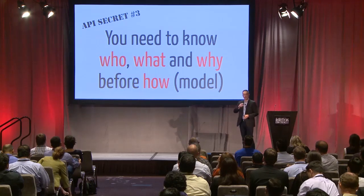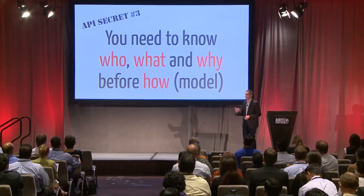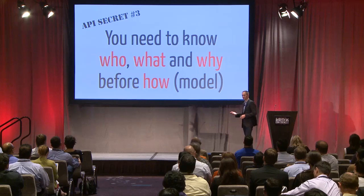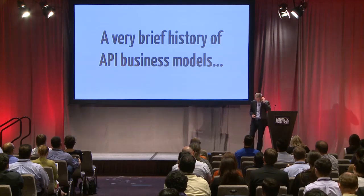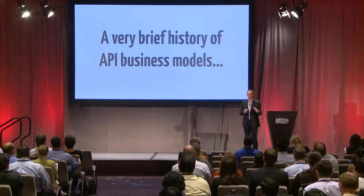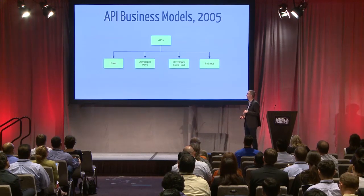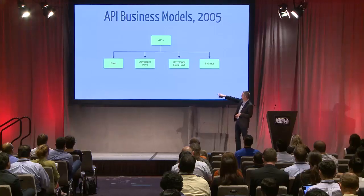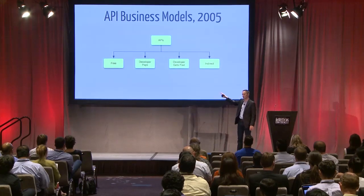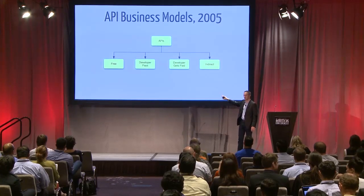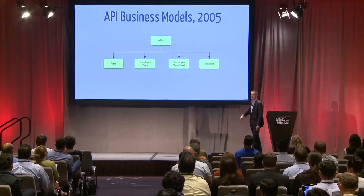So the preface is: answer the questions about why, who, and what before doing the how — what's my business model going to be? The history of API business models in two slides. First, 2005 — the Google Maps API came out, Housing Maps, the phrase 'web mashup' was born. That's considered the birth of this class of APIs. In those days there were four core business models: free, developer pays, developer gets paid, and a bucket called indirect.